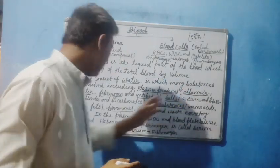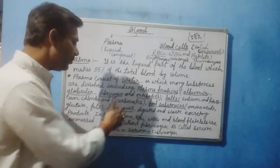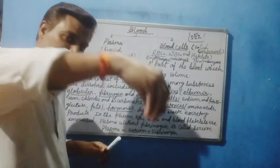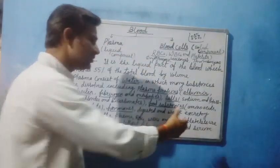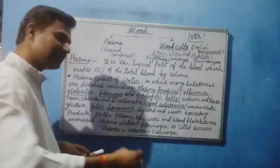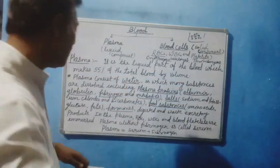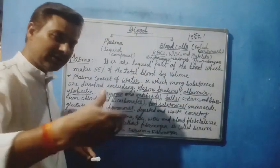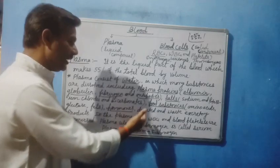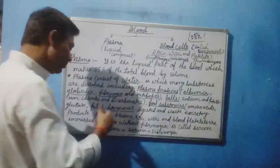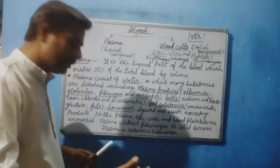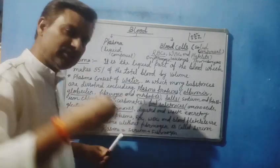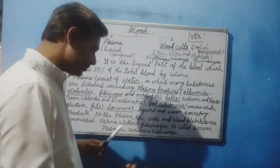Sodium and potassium chlorides and bicarbonates are dissolved in the form of salts inside the plasma. Other food substances like amino acids, glucose, and fats are also dissolved inside the plasma. The plasma also carries hormones and digested and waste excretory products. Inside the plasma, the RBC (red blood cells), WBC (white blood cells), and blood platelets are suspended.